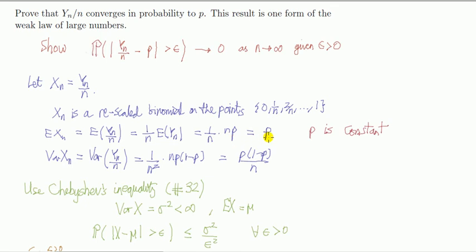Variance of xn, similarly, using the variance operator rule, n squared times the variance of yn, comes to this. Again, that is a constant because it's a function of n and p, which are parameters, constants.